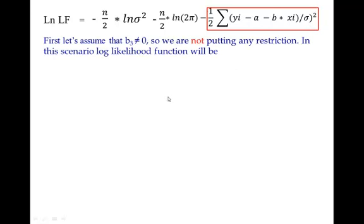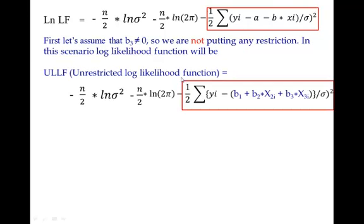Now let's assume that when b3 is not zero, so essentially when you are not assuming that b3 is zero, you are not putting a restriction. Essentially, this is called in scientific term as unrestricted log likelihood function. So when you are not putting any condition that x3 is zero or not, x3 is having impact or not, essentially means b3 is not equal to zero. Unrestricted log likelihood function will take this form when b1, b2 and b3, all three together gives you the predicted value.